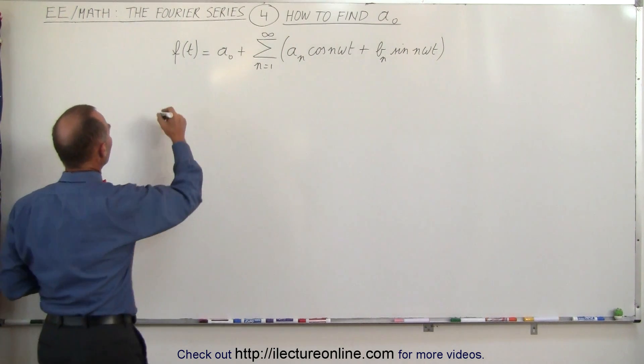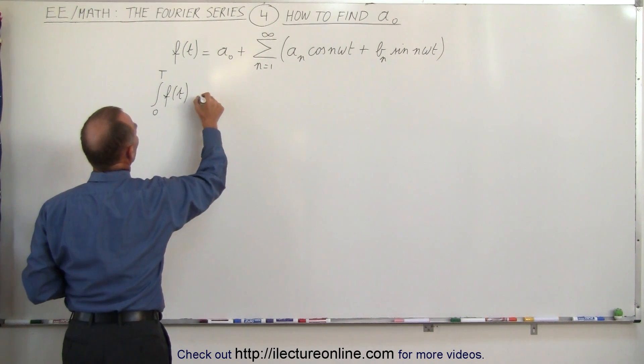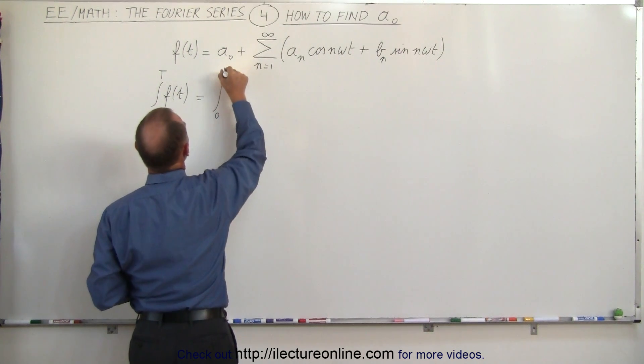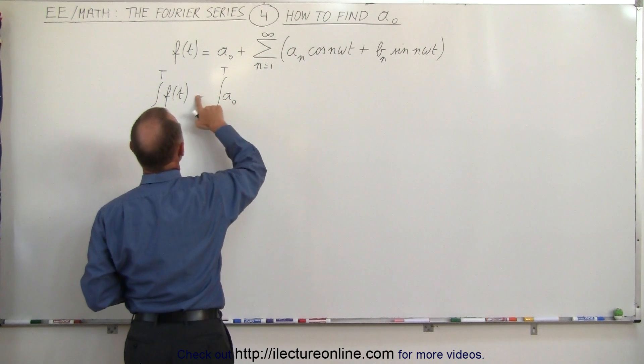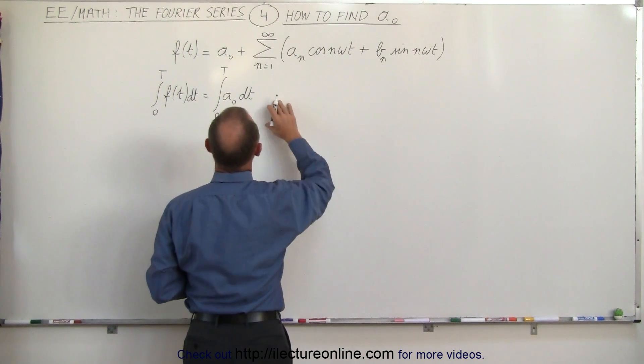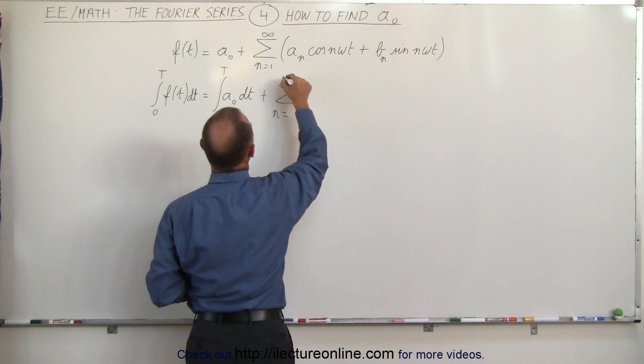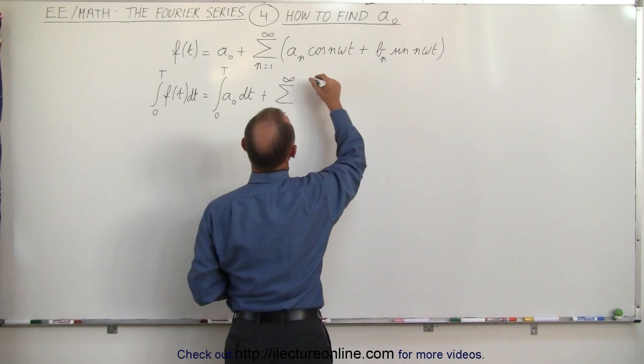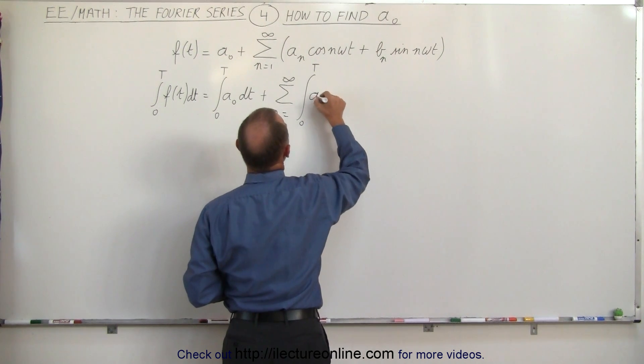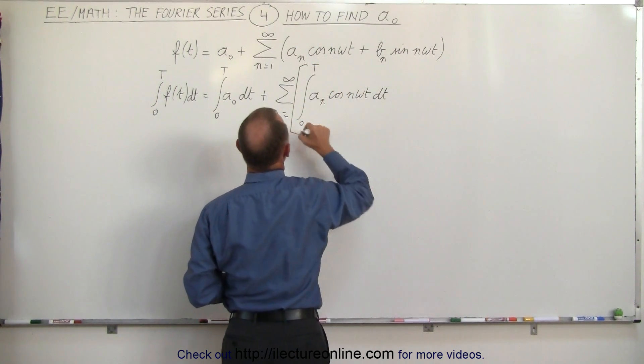So let's find a sub-naught by integrating both sides from 0 to T over a single period of the periodic function. So on the left side, we get the integral from 0 to T of f of t, and that would be equal to the integral of the right side, which would be the integral from 0 to T of a sub-naught times dt. And that would be also plus the infinite sum from n equals 1 to infinity of the integral, it would be the sum of these integrals, so it would be the integral from 0 to T of a sub-n cosine of n omega t dt.